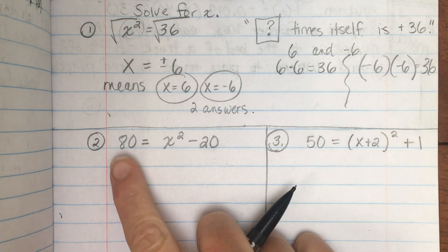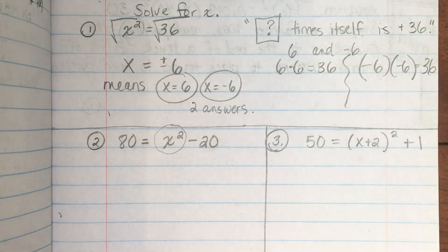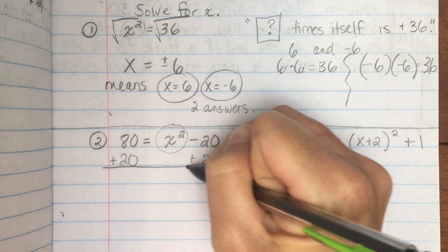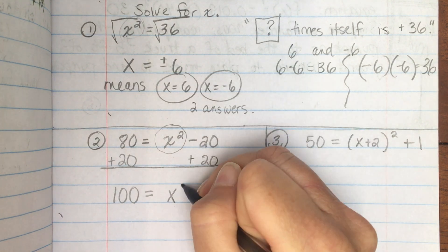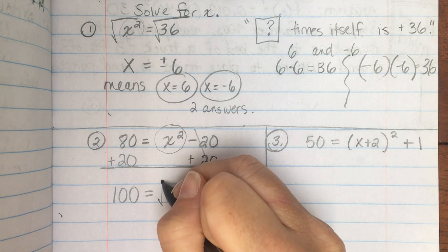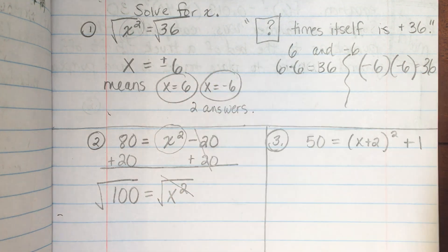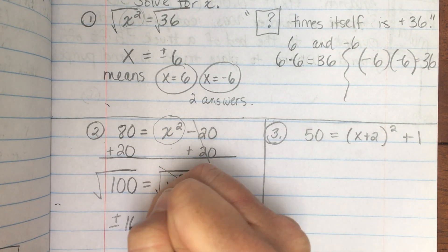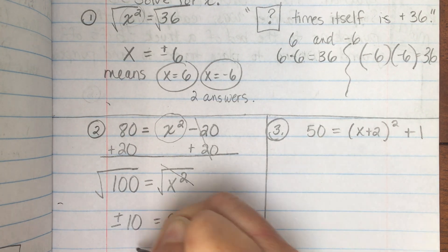Number two. 80 equals x squared minus 20. Your squared term is not isolated. Here it is. It's not all by itself. So, I'm going to add 20, that's the opposite of subtracting 20, to both sides. 80 plus 20 is 100. So I get 100 equals x squared. And these cancel out. The opposite of squaring is square root. So I'm going to square root both sides to undo the squared. The square root and the squared cancels each other out. So I get x equals, and the square root of 100 is plus or minus 10. So your two answers would be 10 and x equals negative 10. Two solutions.